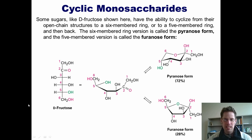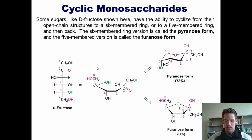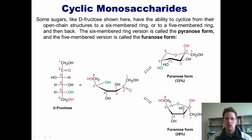Some sugars, like D-fructose shown here, have the ability to cyclize from their open chain forms to a six-membered ring or to a five-membered ring and then back. The six-membered ring is called a pyranose form and the five-membered ring is called a furanose form.